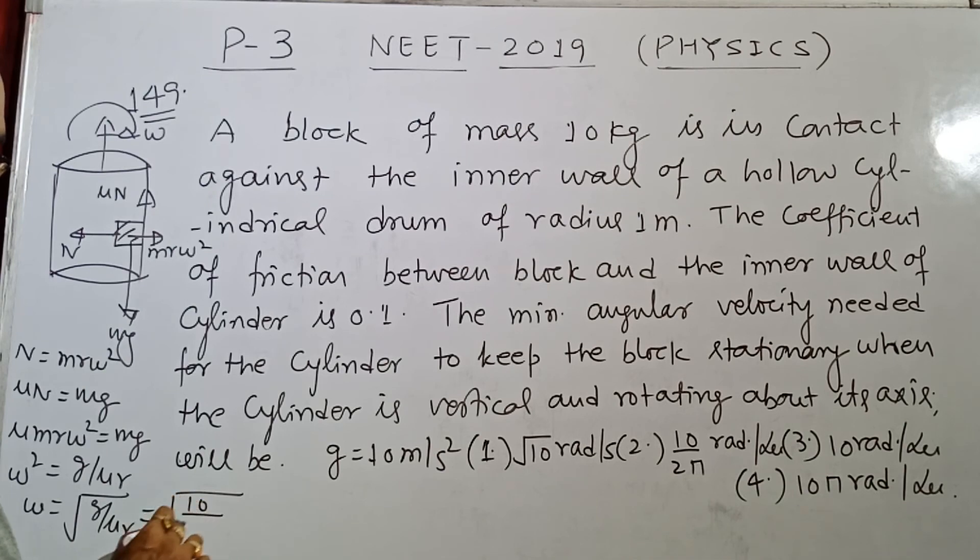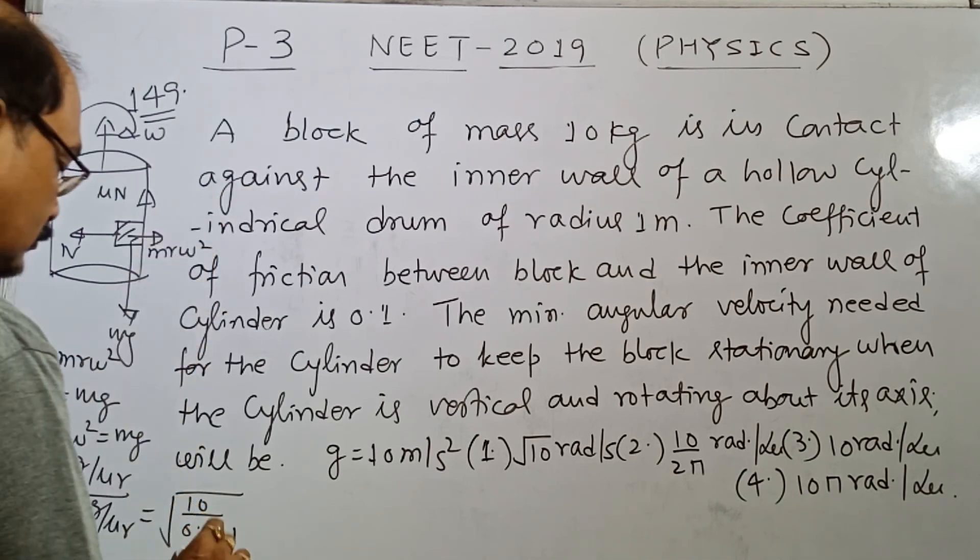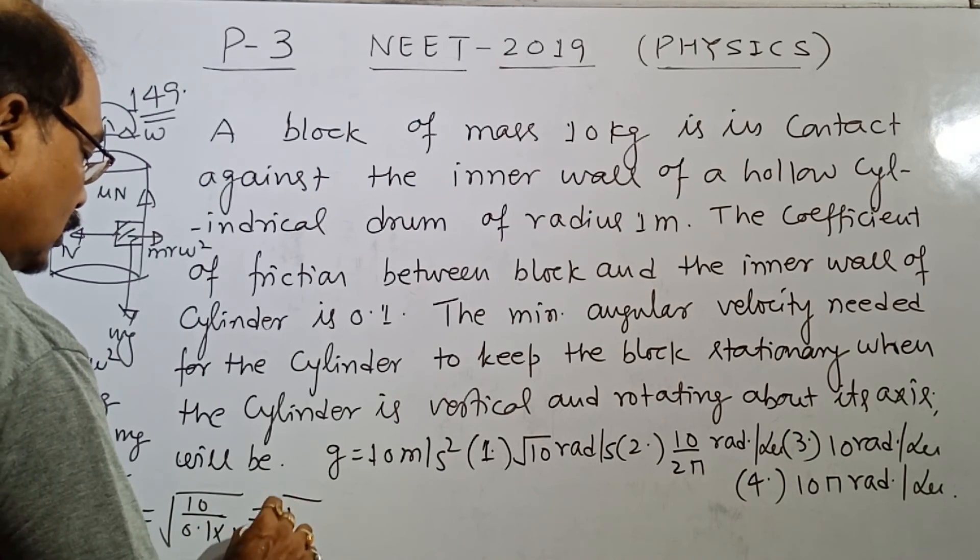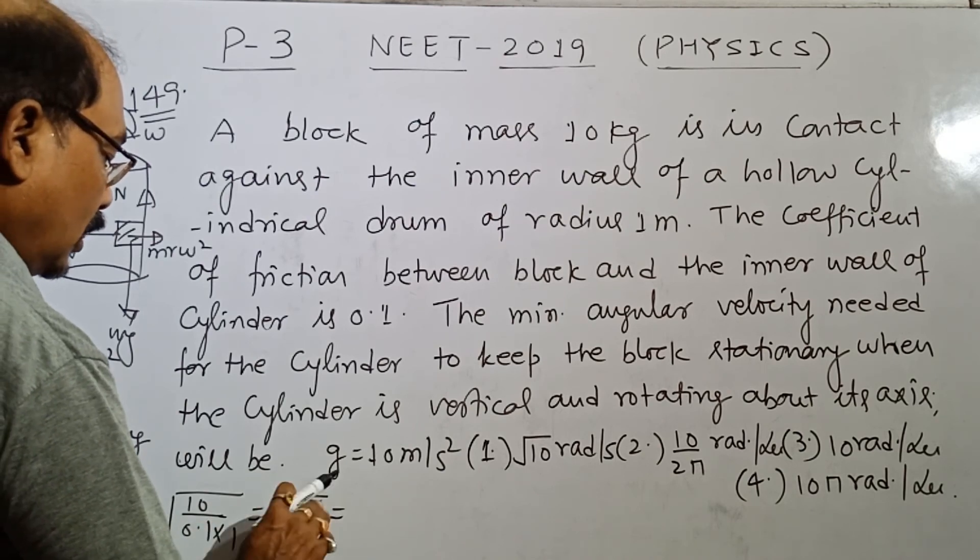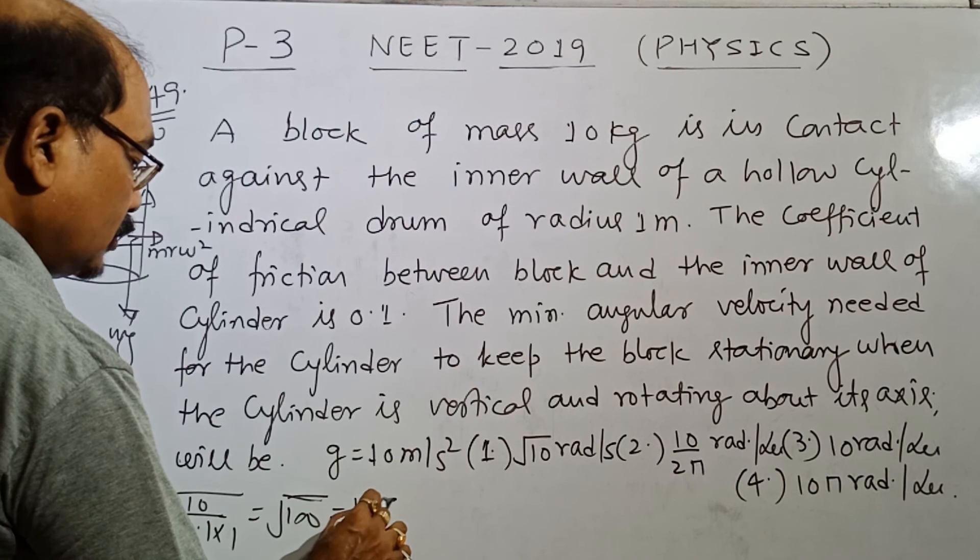G value is 10, Mu value is 0.1, R value is 1. So this is under root 100, and this is 10 radian per second.